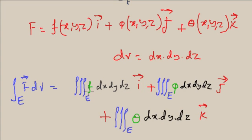Where f is the function of x,y,z, φ is another function of x,y,z, and θ is another function of x,y,z. So you can calculate the volume integral by using triple integration.